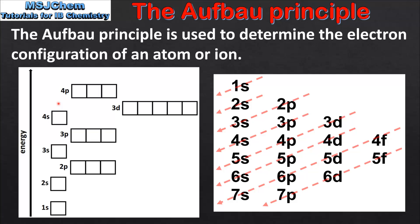After the 3d sublevel we have the 4p sublevel. The order of filling follows this energy sequence: 1s fills first, followed by 2s, 2p, 3s, 3p, then 4s — note that after 3p the 4s fills before 3d — followed by 3d, then 4p. In this video electron configurations up to the 4p sublevel are covered, but the order of filling continues in order of increasing energy.